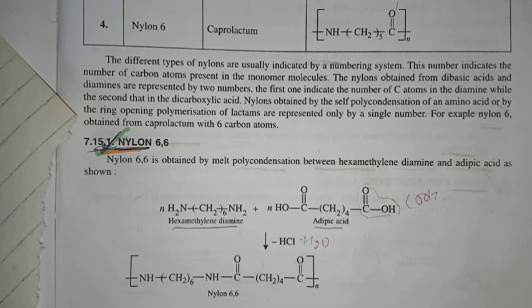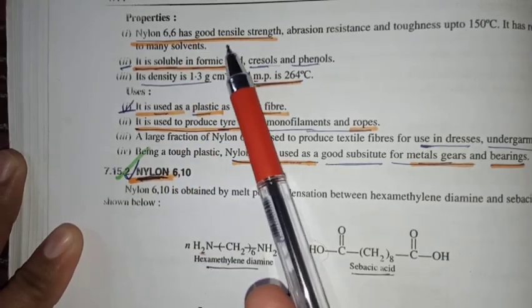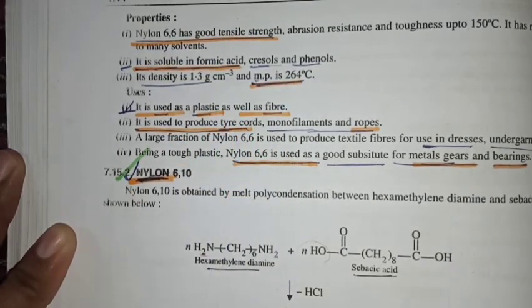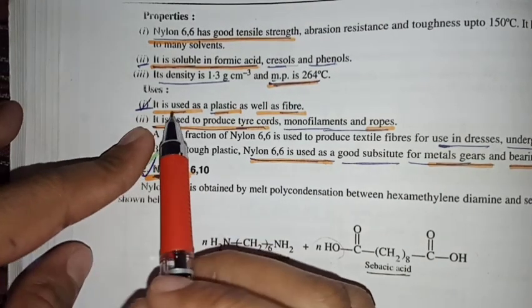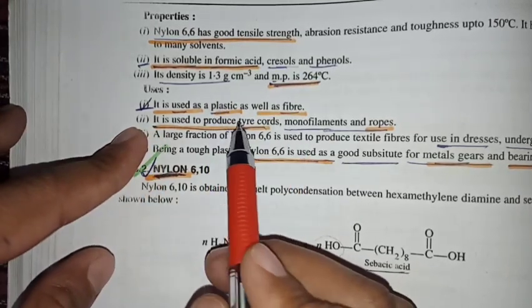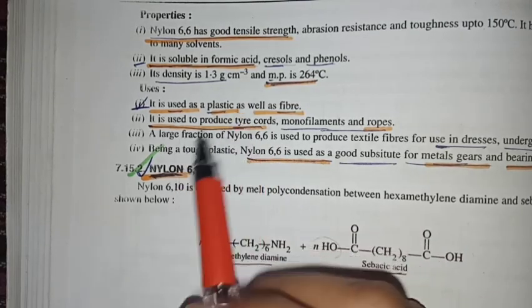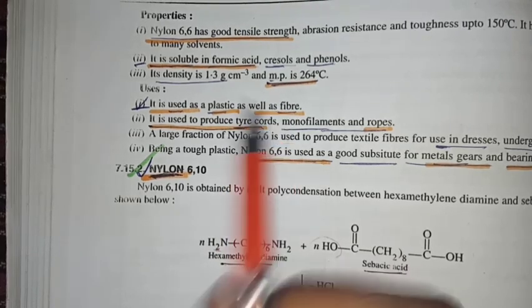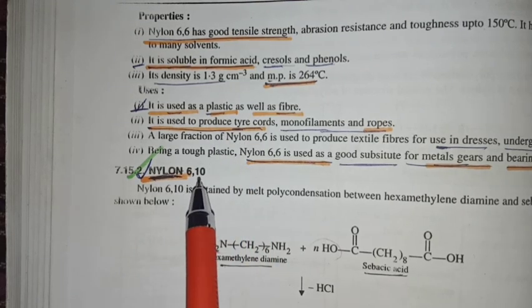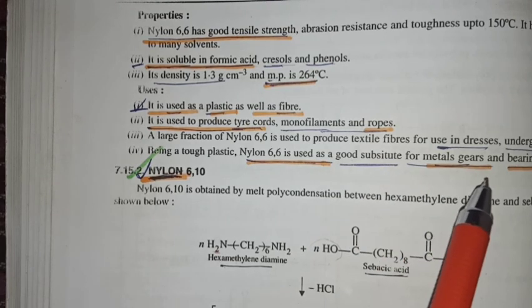First of all, what is uses and characteristics. We can see properties: it has a good tensile strength, it is soluble in formic acid, it is used as a plastic as well as fiber. So nylon 6,6, how can we use it? And it is a good substitute for metals, gears and bearings.